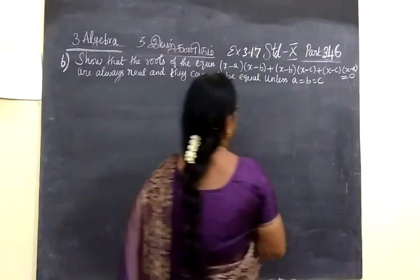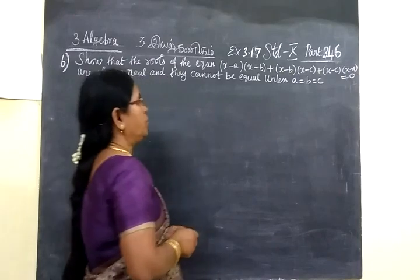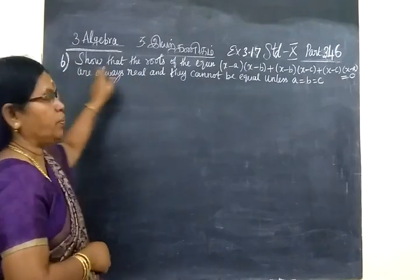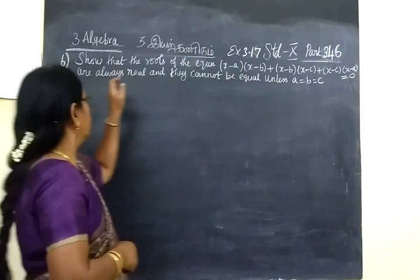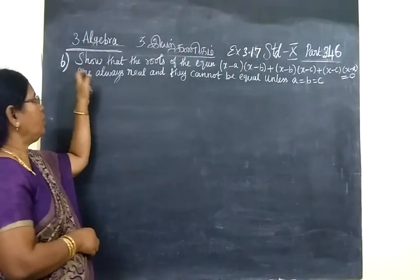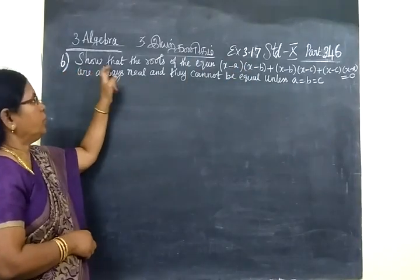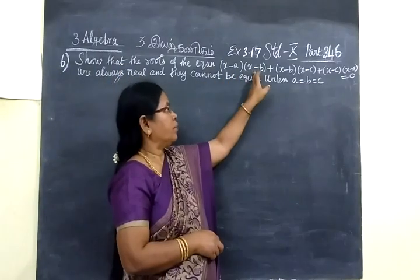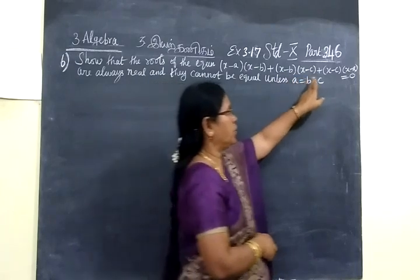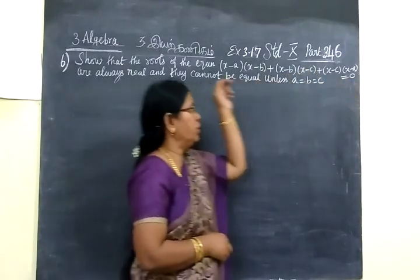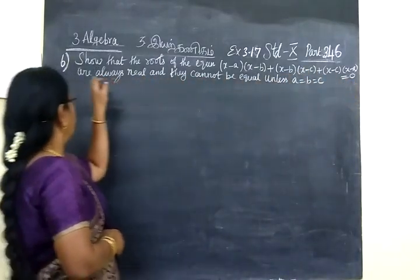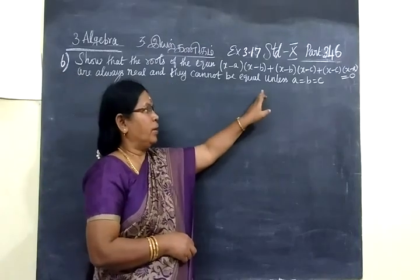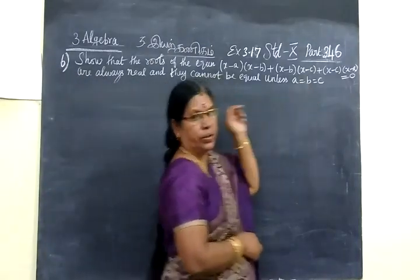Today we want to take exercise 3.17, question 6 from B406. This is a very important question: show that the roots of the equation (x minus a)(x minus b) plus (x minus b)(x minus c) equal to 0 are always real and they cannot be equal unless a equals b equals c.